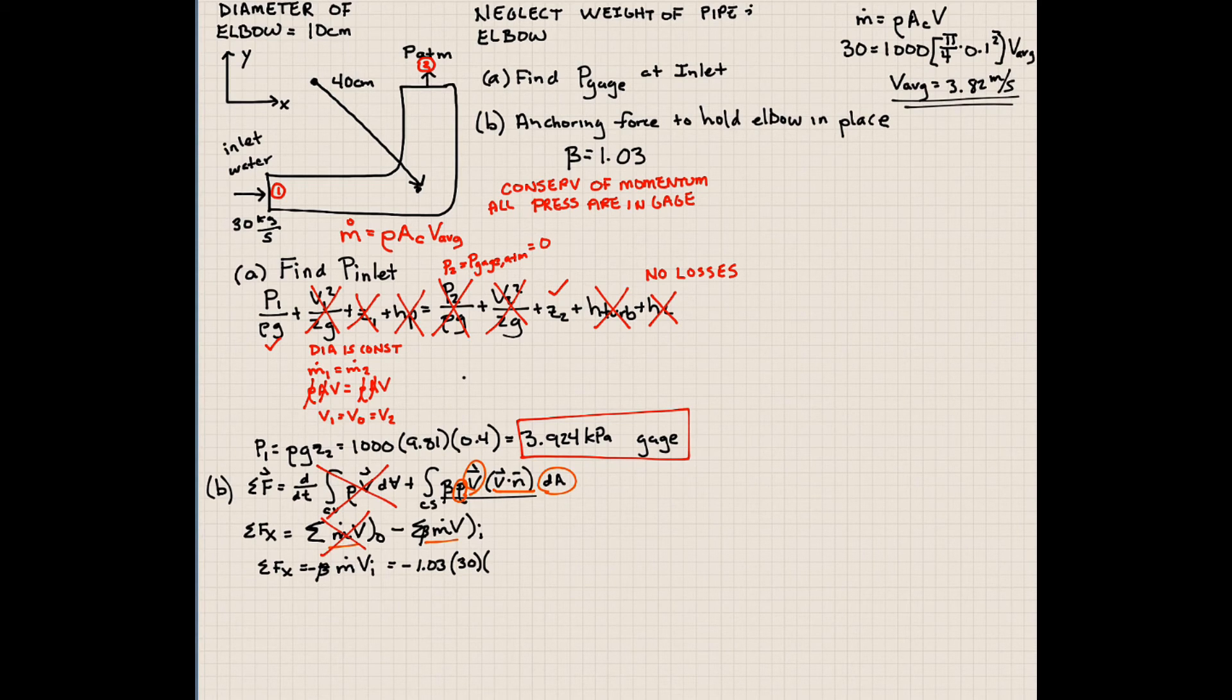Now that we know that, we can use that here. Our inlet velocity and also our exit velocity, since they're the same, are 3.82 meters per second.